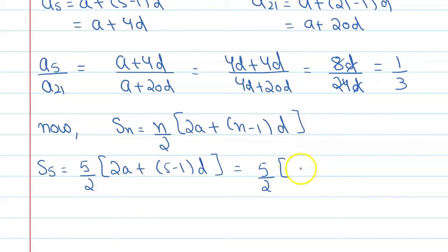So s5 is equal to 5 upon 2, 2a plus 5 minus 1 into d. And here we will get 5 upon 2 and 2a. As we know that value of a is 4d, so just put it here. You will get 4d plus 4d, 5 minus 1 that is 4d.